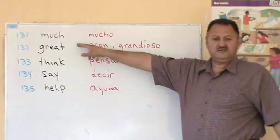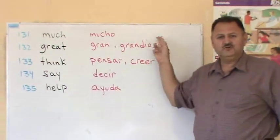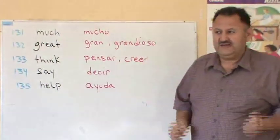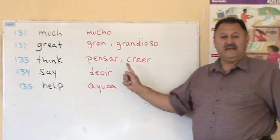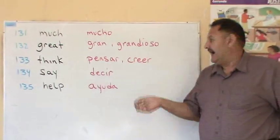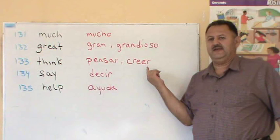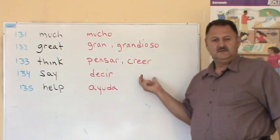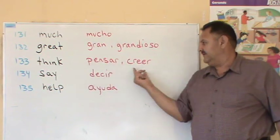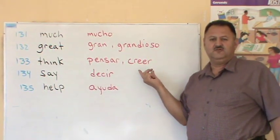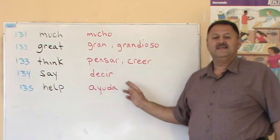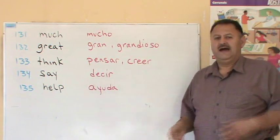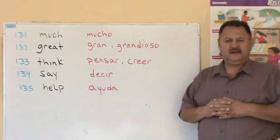Much significa mucho. Great: gran o grandioso — it's great. Think: pensar, to think — a veces también significa creer. I think — es como si queramos decir believe — I think: yo creo. A veces se dice think para expresar creencias, yo creo. Say: decir — I say. Help: ayuda o ayudar, help.